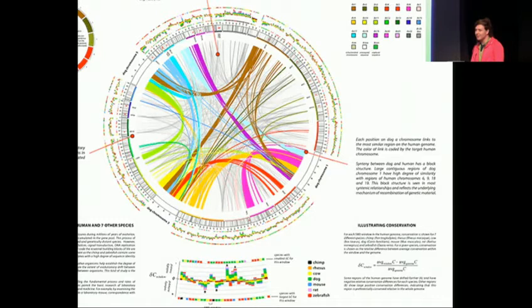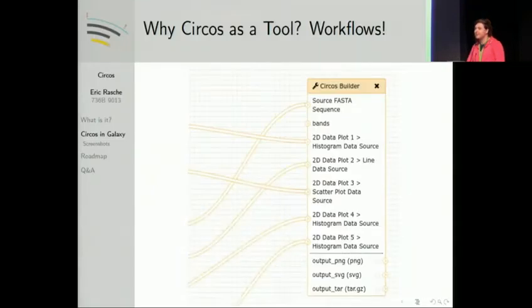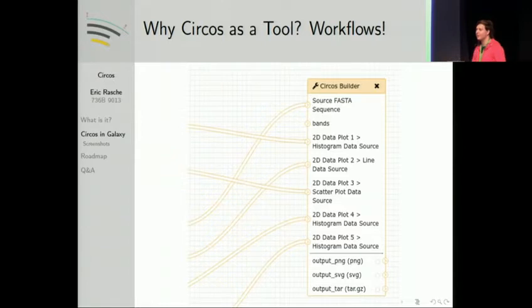We've been trying to work on a generic way to make these in Galaxy. Why would you want to do them in Galaxy? Because we use them as workflow summaries — that's what we also use the JBrowse tool for. The really great power of these tools in Galaxy is that we can write something generic enough that you can take any workflow and all of the datasets you've produced, summarize them into a single graphic or two graphics, and have these as workflow outputs which the user can interpret.